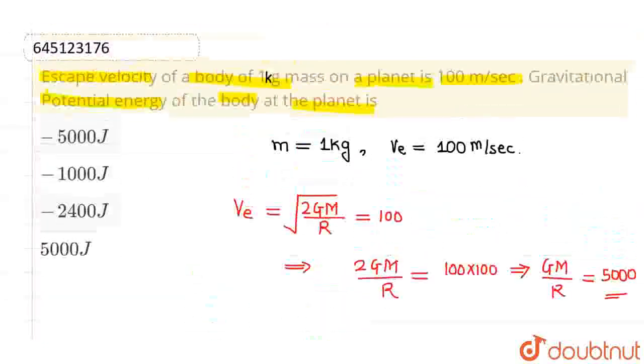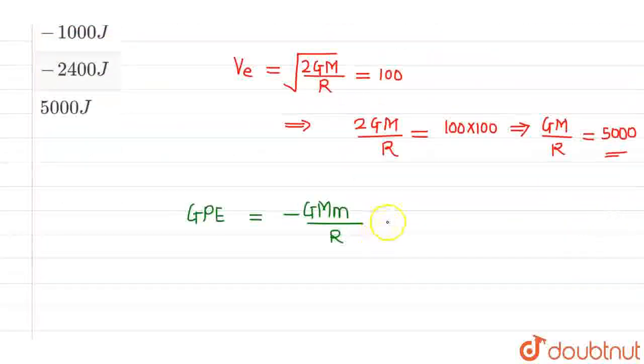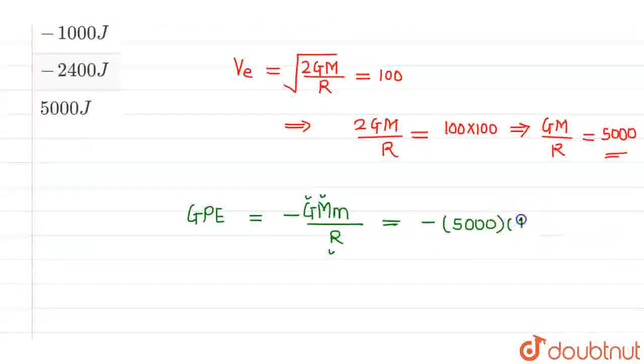Since we have to find out the gravitational potential energy of the body at the planet, that means on the surface of the planet, this will be equal to—since the value of GM/R is 5000—minus 5000 times the mass of the body, which is 1 kg.